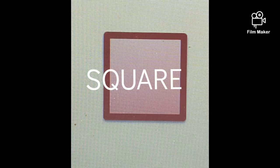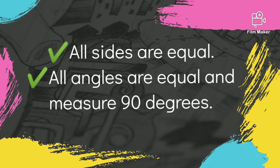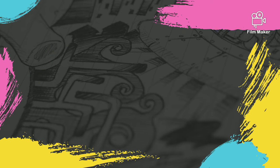Number two is square. In a square, all sides are equal, and all angles are equal and measure 90 degrees.